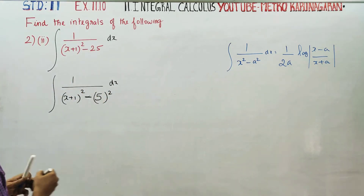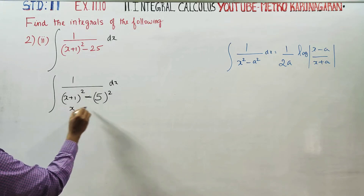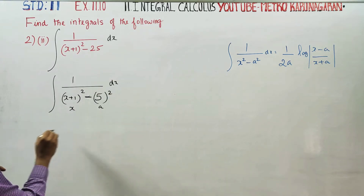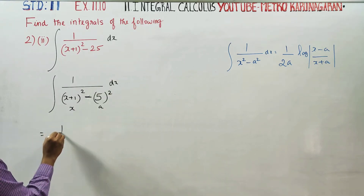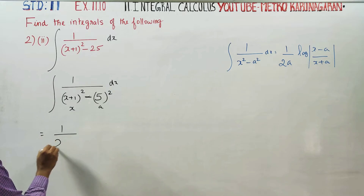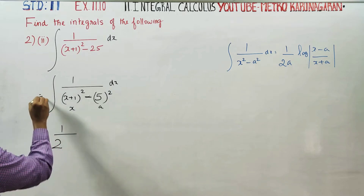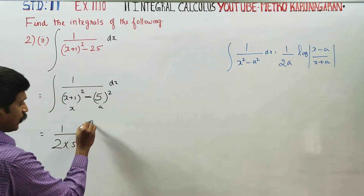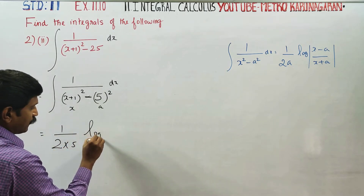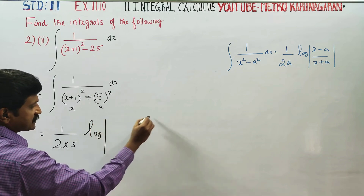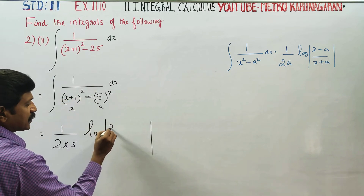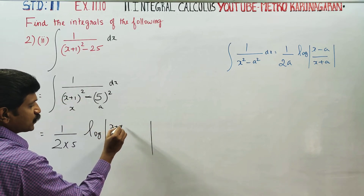This is our readymade formula. Here, (x plus 1) acts as X in the formula, and 5 acts as A. So we apply the formula directly: 1 by 2a, which is 1 by 2 into 5, logarithm of (x minus a), using (x plus 1) in place of x.